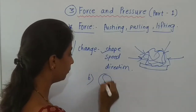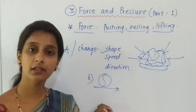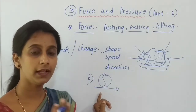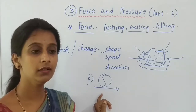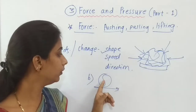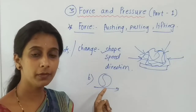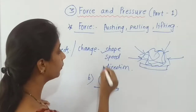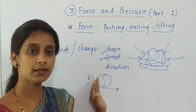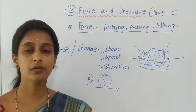Second effect — speed: we saw the example of ball B which was in motion. If we apply force on it, it either goes fast or goes slow, and sometimes it even stops. So speed is changed by applying force on an object.